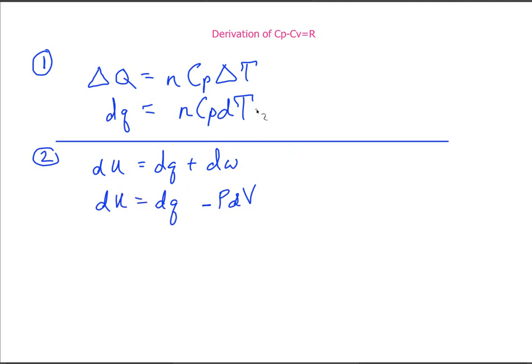Then we're going to take and make a substitution dQ is N Cp dT. We just derived that. So we go with dU is equal to N Cp dT